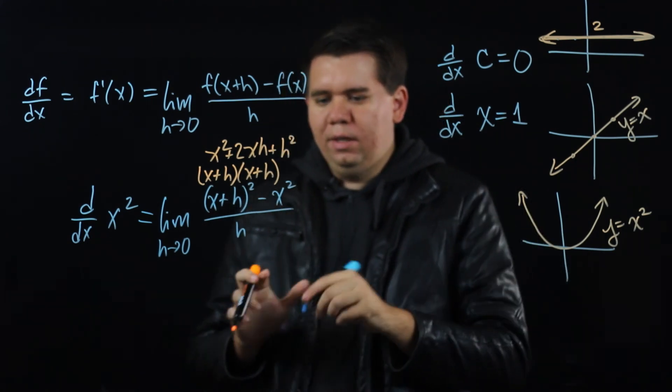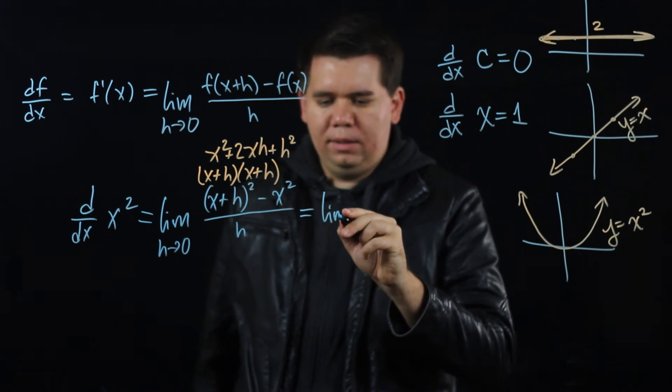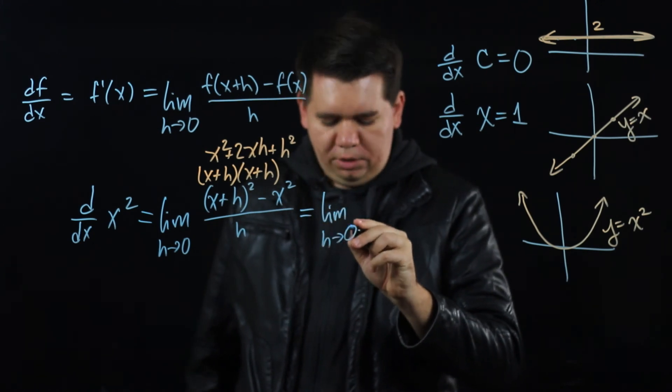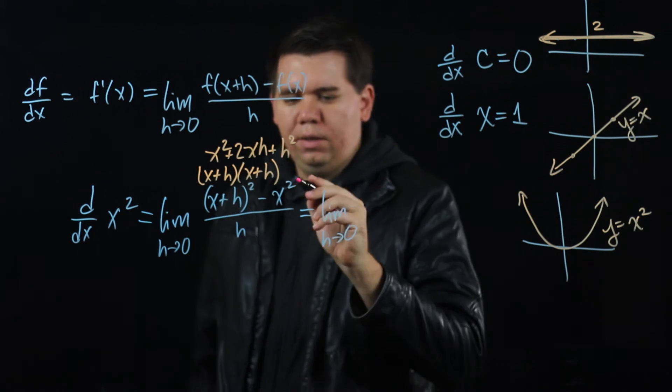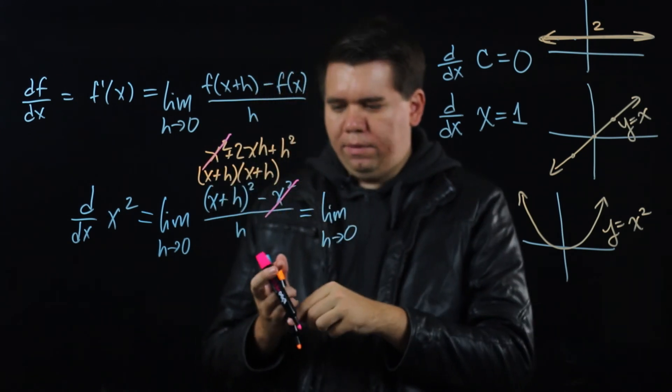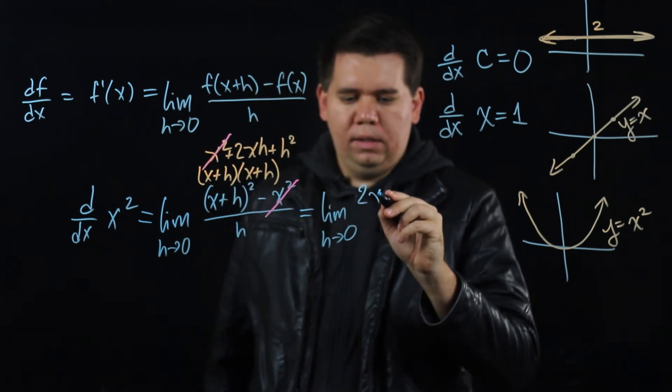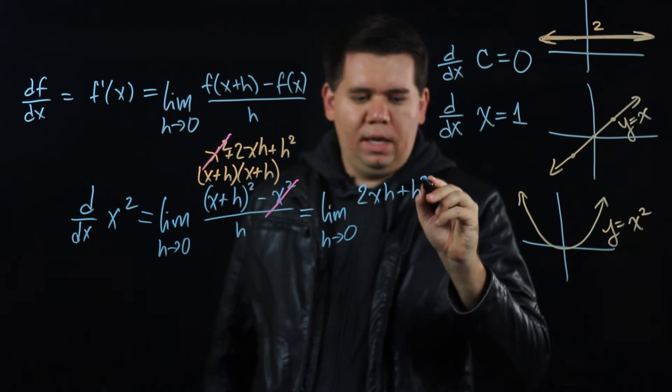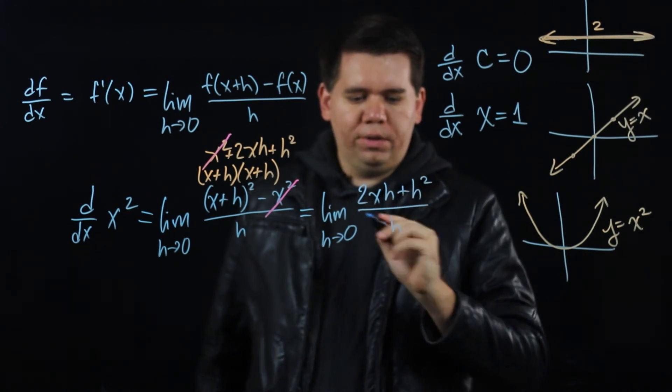Subtract off the x². And you're left with the limit as h goes to 0 of canceling those x squareds, of 2xh + h² all over h.